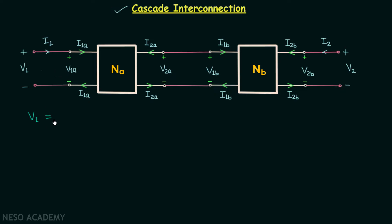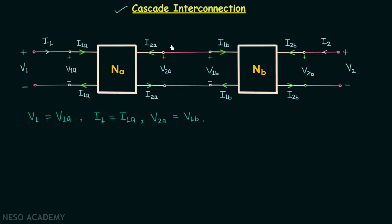V1 is equal to V1a, and I1 is equal to I1a. Moving further, we can see that voltage V2a is equal to voltage V1b, and current I2a is equal to negative of current I1b.